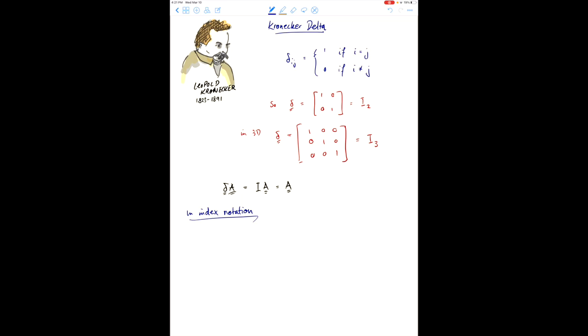Now, in index notation, when you act with the Kronecker Delta on a vector u, you write this as delta ij uj, which in 3D, if we write out the individual terms, it's just delta i1 u1 plus delta i2 u2 plus delta i3 u3.